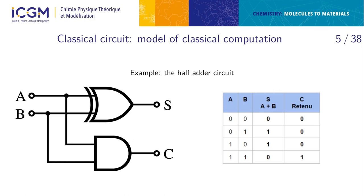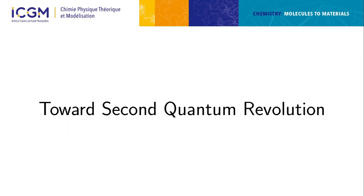A simple example is the half-adder circuit: adding the values of A and B gives sum S, and C is the carry — it has value two when both A and B equal one. The gates here are copies of bits B and A.